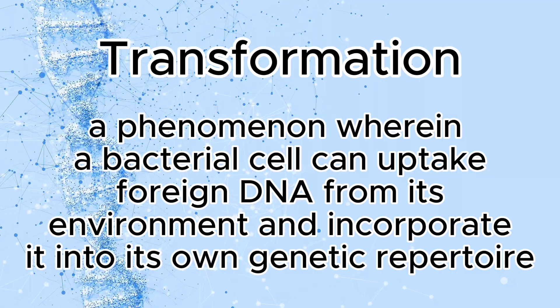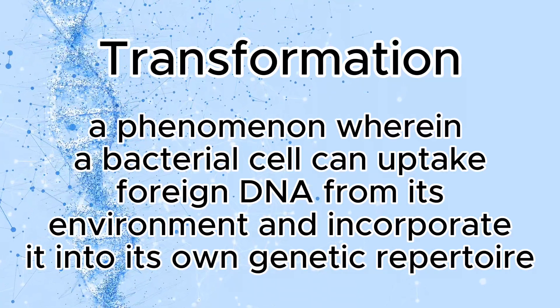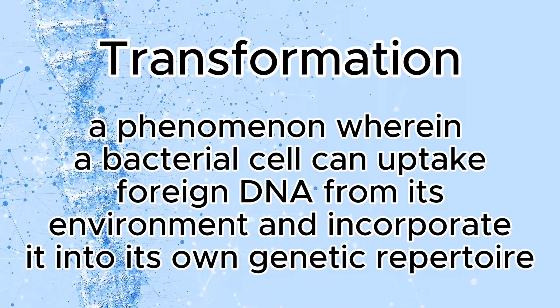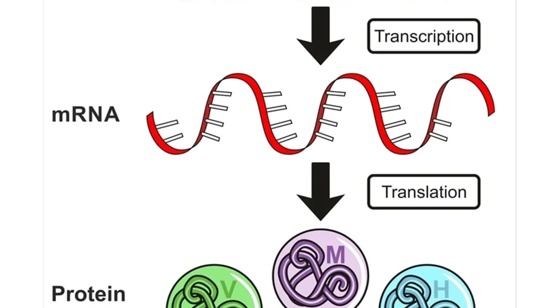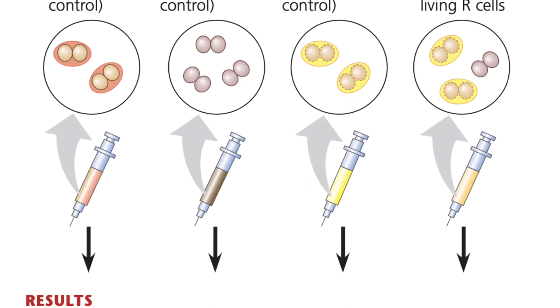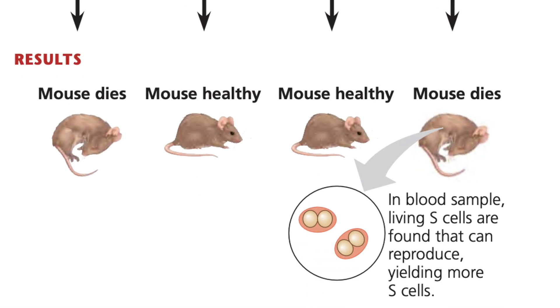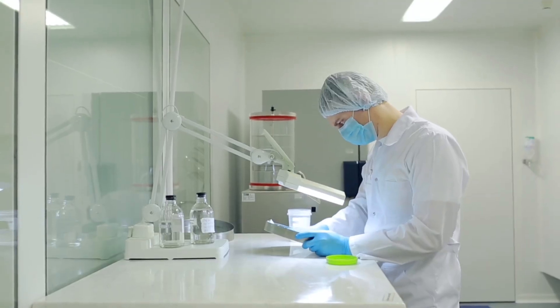Transformation is a phenomenon wherein a bacterial cell can uptake foreign DNA from its external environment to incorporate it into its own genetic repertoire. This allows the bacteria to become effectively transformed and able to produce the genes located on this foreign DNA. Back in Unit 6, we learned about Friedrich Griffith, who observed the transformation of bacteria wherein the non-pathogenic R strains became transformed when mixed with heat-killed S strains that spilled their DNA containing disease-causing genes. But here we're going to be inducing transformation in a controlled setting.